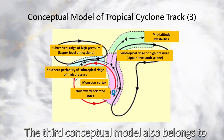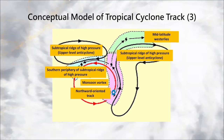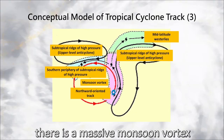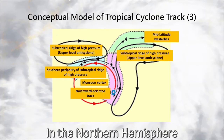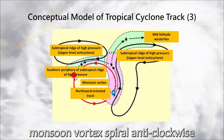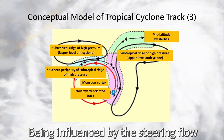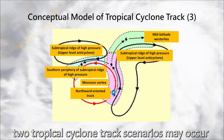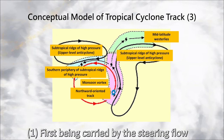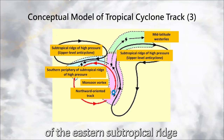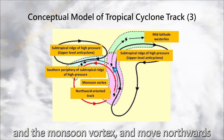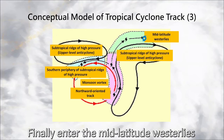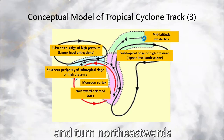The third conceptual model also belongs to the northward-oriented track model. In addition to the setting of subtropical ridges of high pressure in the second conceptual model, there is a massive monsoon vortex. In the northern hemisphere, the airstream of this monsoon vortex spirals anticlockwise. Being influenced by the steering flow of this monsoon vortex, two tropical cyclone track scenarios may occur. In the first scenario, the cyclone is carried by the steering flow of the eastern subtropical ridge and the monsoon vortex and moves northwards, then moves into the cold region between the two subtropical ridges, and finally enters the mid-latitude westerlies and turns northeastwards.